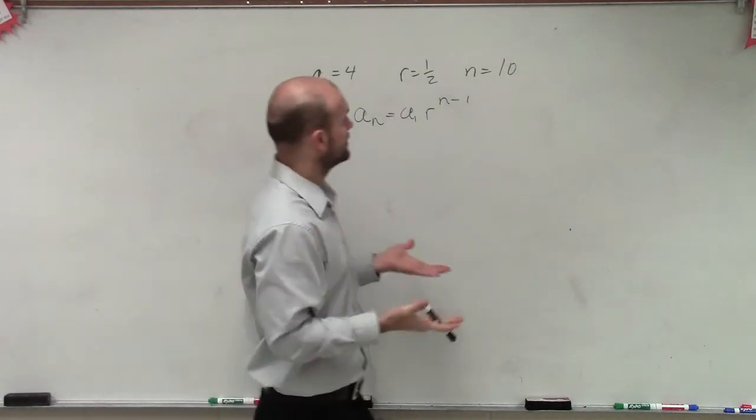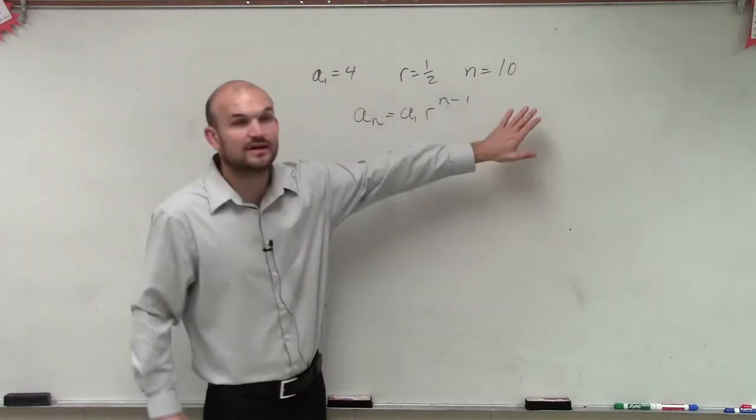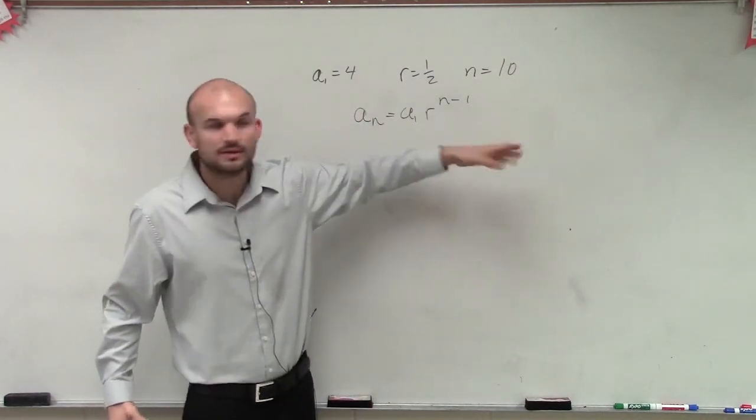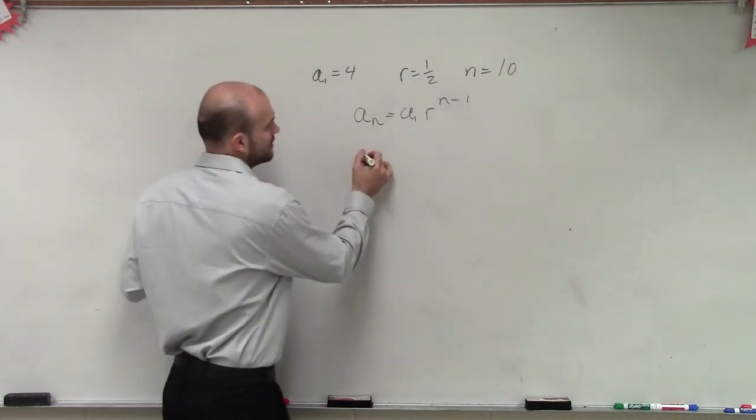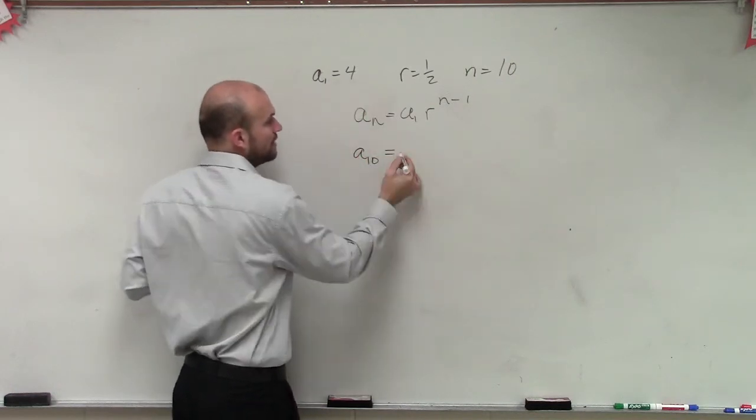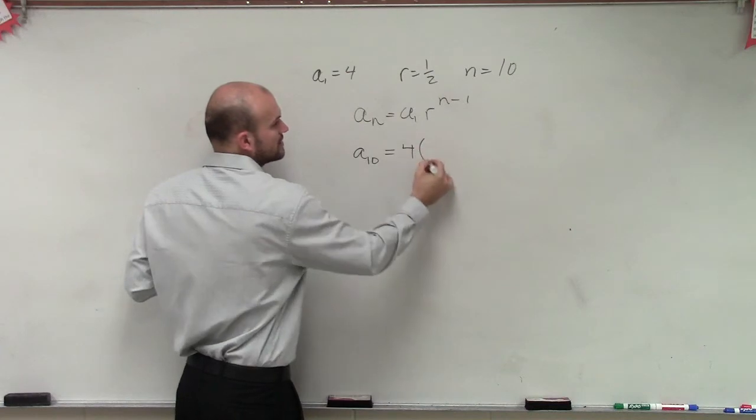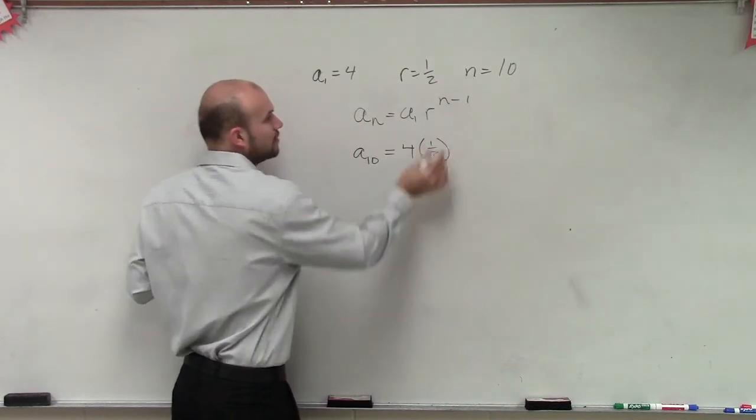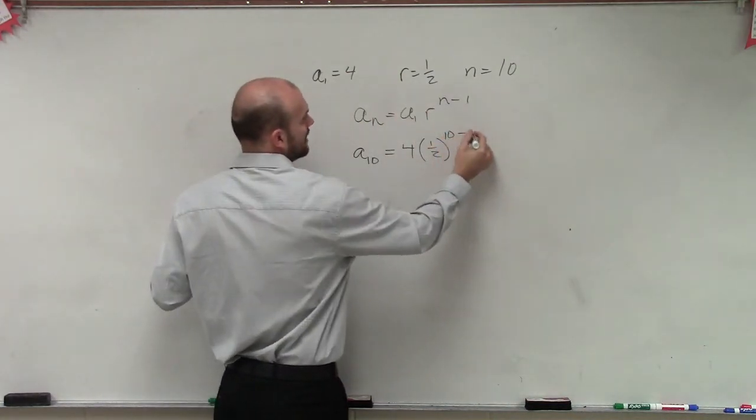Now, what we got to do then is determine what we're trying to figure out. We're trying to figure out what is this 10th term. So we're trying to figure out a of 10, which is going to equal a of 1, which we know is 4, times 1 and a half, raised to the 10 minus 1.